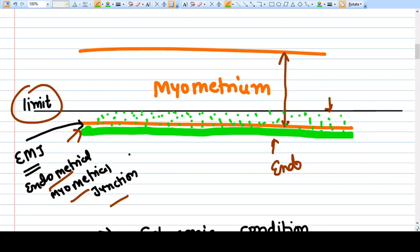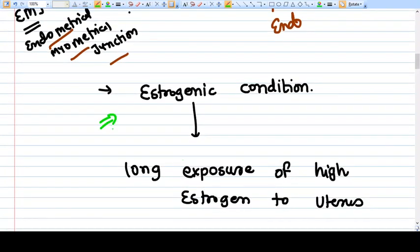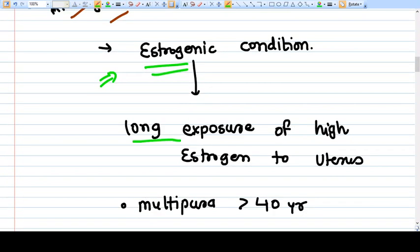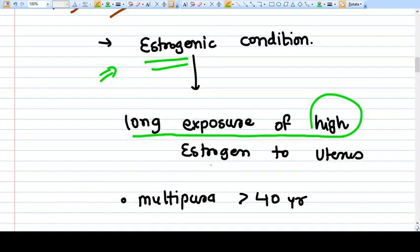This can also be called peri-endometrial myometrial adenomyosis, but if this tissue grows beyond the limit here, then it will convert into real endometriosis. Adenomyosis is a type of endometriosis, so it is also an estrogenic condition. It happens with long exposure of high estrogen to the uterus.